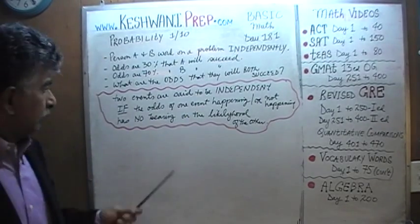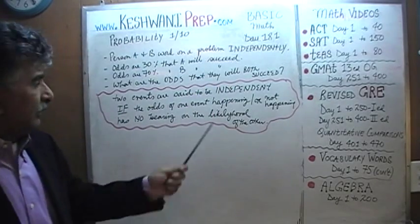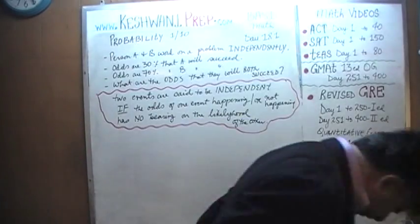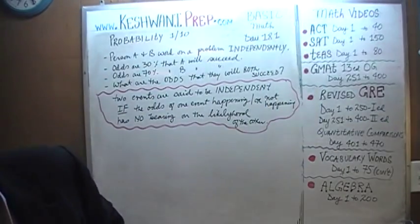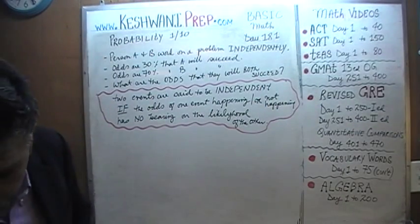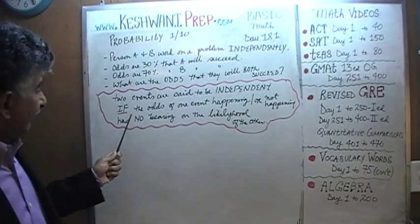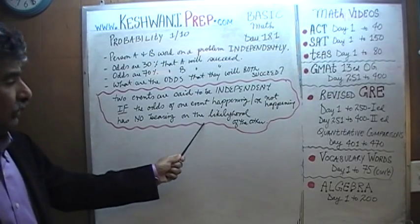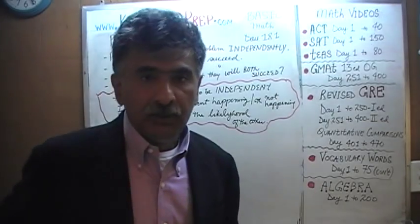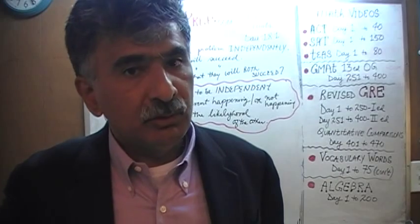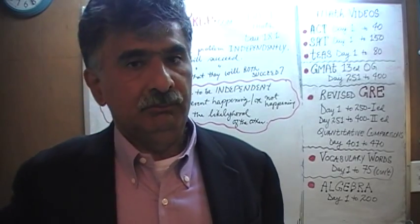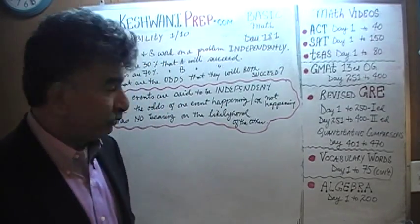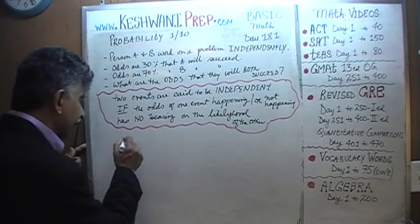We know they're working independently. What does it mean when two events are independent? Two events are said to be independent if the odds of one event either happening or not happening has absolutely no bearing on the likelihood of the other. How successful person B is going to be has absolutely nothing to do with whether or not A will succeed, and vice versa, because they're working independently.